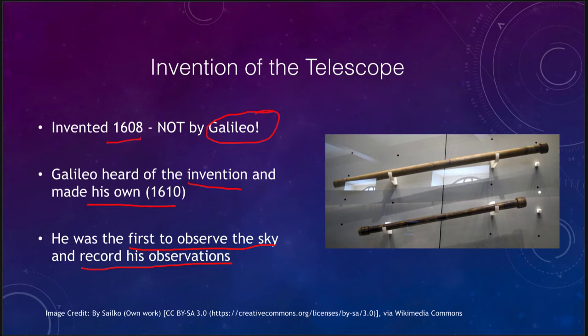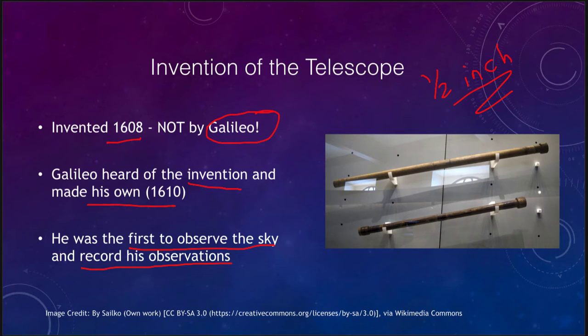We actually have records of Galileo's observations that exist to this day — what he observed over 400 years ago we can still see. He used very small telescopes like these, about a half an inch in diameter. While the telescopes were longer, the lenses were only a half an inch, but that half inch is much larger than the pupil of your eye, which is the part actually collecting the light. This allowed Galileo to see things that would otherwise have been invisible.